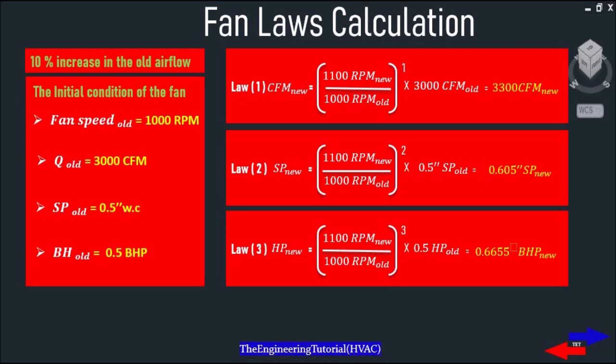The best way to understand what's happening when we change the speed of the fan is by looking at some examples. Let's say we have a fan operating at 1000 RPM, delivering 3000 CFM of air at a static pressure of 0.5 inches of water column, and has a brake horsepower of 0.5. If you speed the fan up 10% to 1100 RPM, what is the performance of the fan at the new speed?